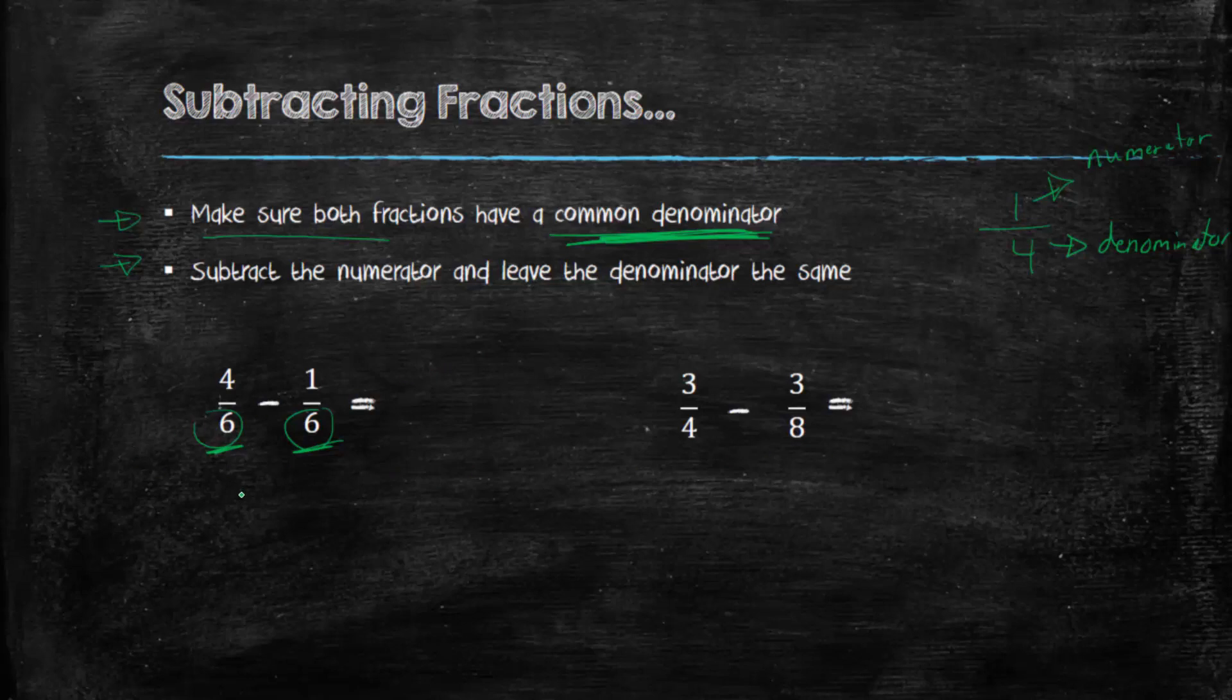So let's look at these two examples here. The first thing we look at is denominators. Are they the same? In this case, yes. If they are, all we have to do is subtract the numerator. So what's 4 minus 1? 3. And we leave the denominator as is. So 4 over 6 minus 1 over 6 is 3 over 6.